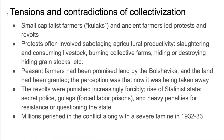When agriculture was first collectivized, these small capitalist farmers — the kulaks — and ancient farmers sometimes led protests and revolts. Not all of them did — this was a minority activity — but it was serious enough to be of great concern to the Soviet authorities. Some of these protests involved sabotaging agricultural productivity, slaughtering and consuming livestock, even burning down farms, or destroying and hiding grain stocks.